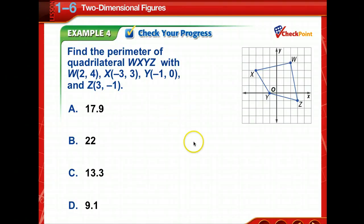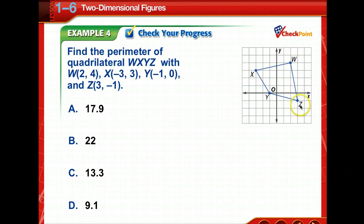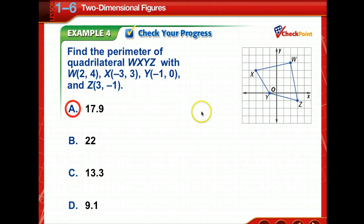Time to check your progress: find the perimeter of quadrilateral WXYZ. None of the sides are straight horizontal or vertical, so you must use the distance formula for all four sides — XW, WZ, ZY, and YX. Pause and work it out. The answer is approximately 17.9 units. If you didn't get that, go back and check your math until you arrive at 17.9.